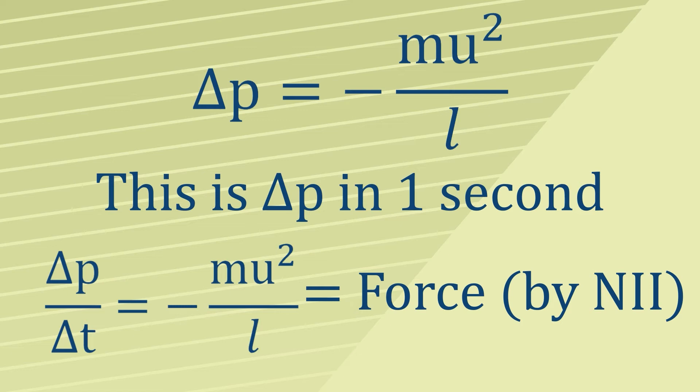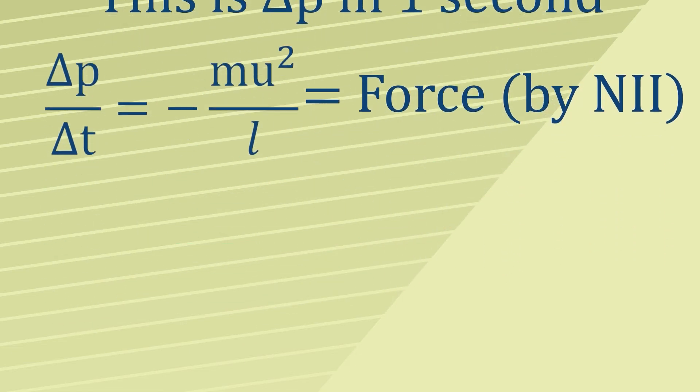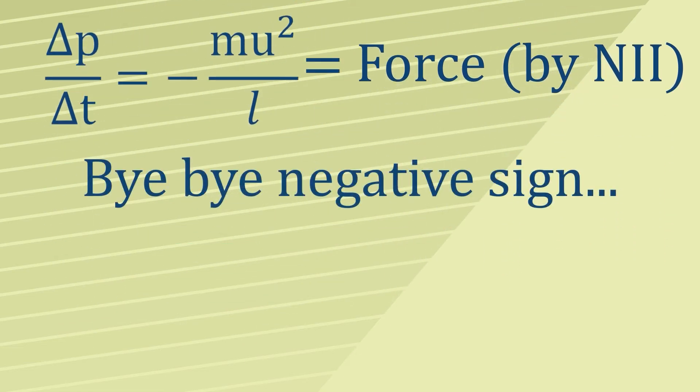But what we want is the force of the particle on the wall, because that's what pressure is caused by. Therefore, because these two forces make up a Newton pair, we can say that the force of the particle on the wall is just going to be positive, and we can lose the minus sign.